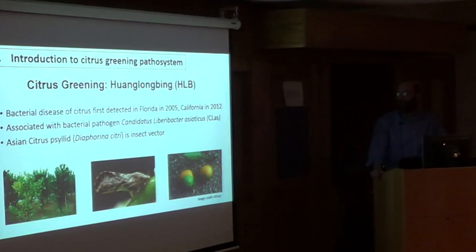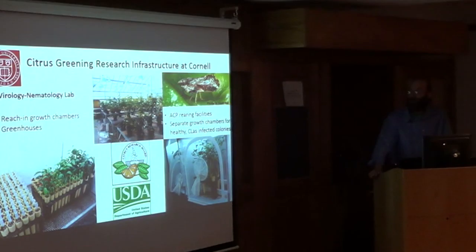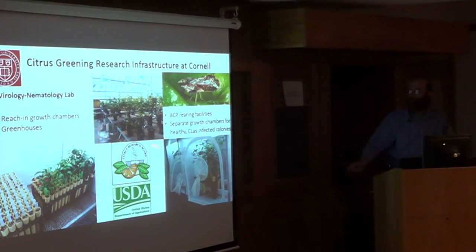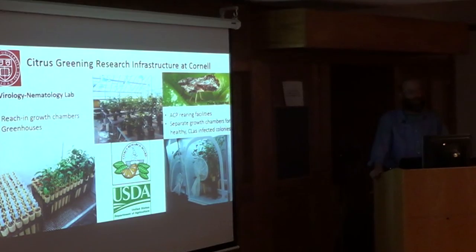The Asian citrus psyllid is a hemipteran insect — a piercing-sucking insect that feeds on plant phloem sap. It is in the same group of insects as aphids and whiteflies that are well characterized for their ability to transmit plant disease. To get this work off the ground, we've put a lot of effort over the last year and a half to establish citrus greening research infrastructure at Cornell. I also want to acknowledge the funding we've received from the California Citrus Research Board and the USDA to set up this research.